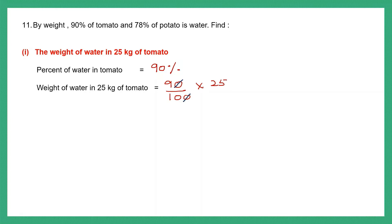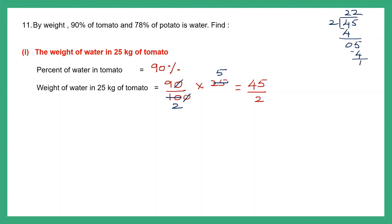So let's cancel: cancel one 0 on top and one 0 here. Then I can cancel 10 and 25 both by 5. 5 2s are 10, 5 5s are 25. Now let's multiply — 9 5s are 45 — my denominator is 2. So let's divide 45 by 2. 2 2s are 4, bring down 5, that's 25, bring down the remainder 1, put a decimal point, add 0, bring it down. 5 2s are 10. So the weight of water in 25 kg of tomato is 22.5 kg.